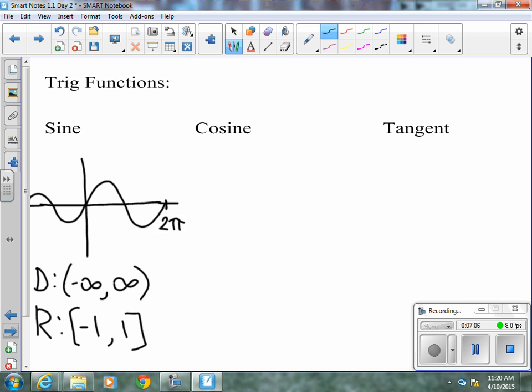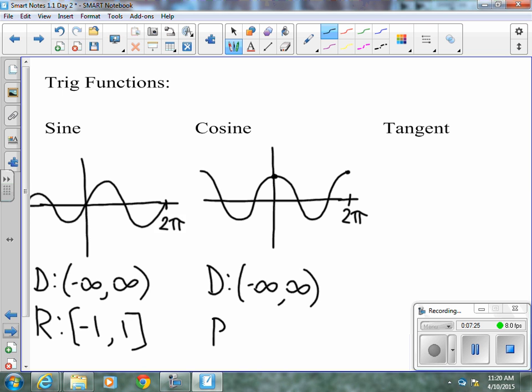Cosine is similar to sine. It looks a little bit different. Cosine starts at 1, and it does its full period by the time it gets to 2 pi. So, its domain is also negative infinity to infinity. And, its range is negative 1 to 1.